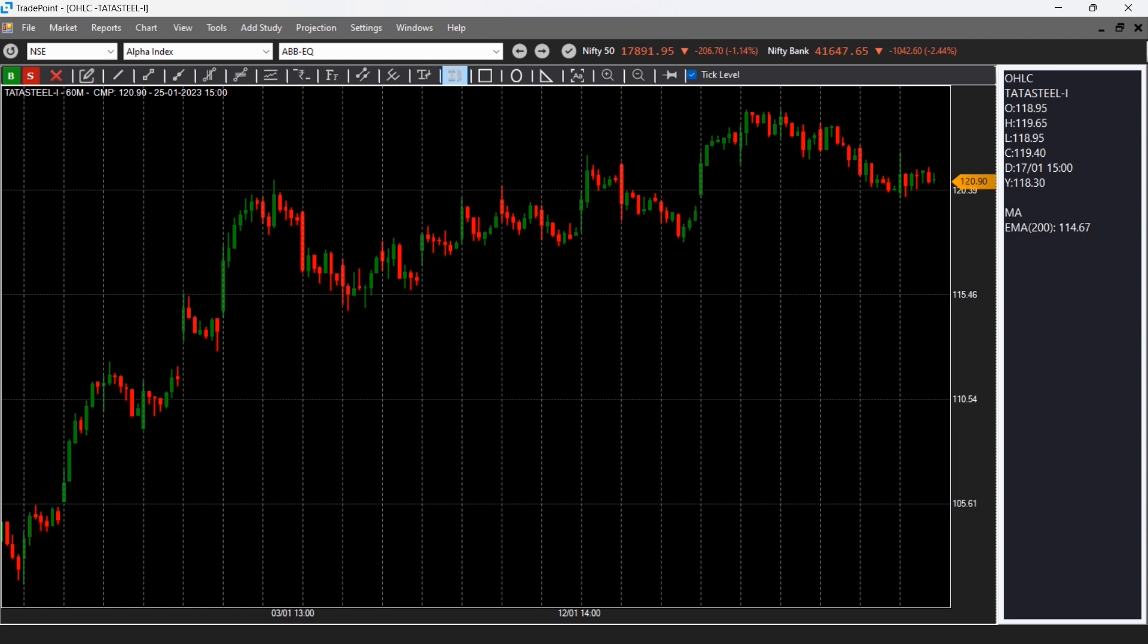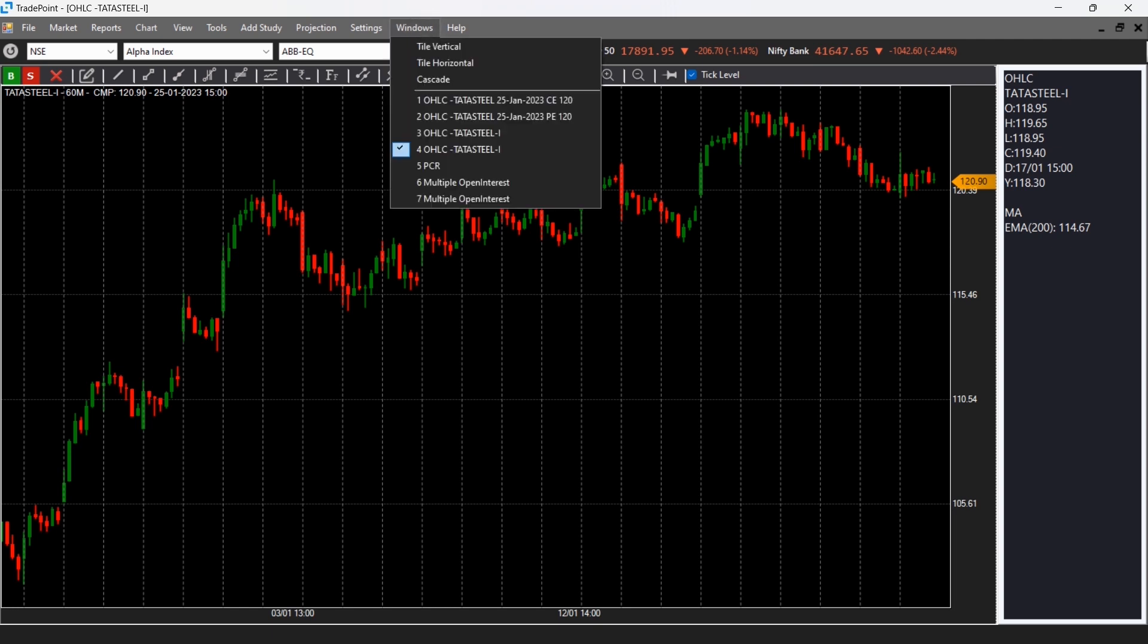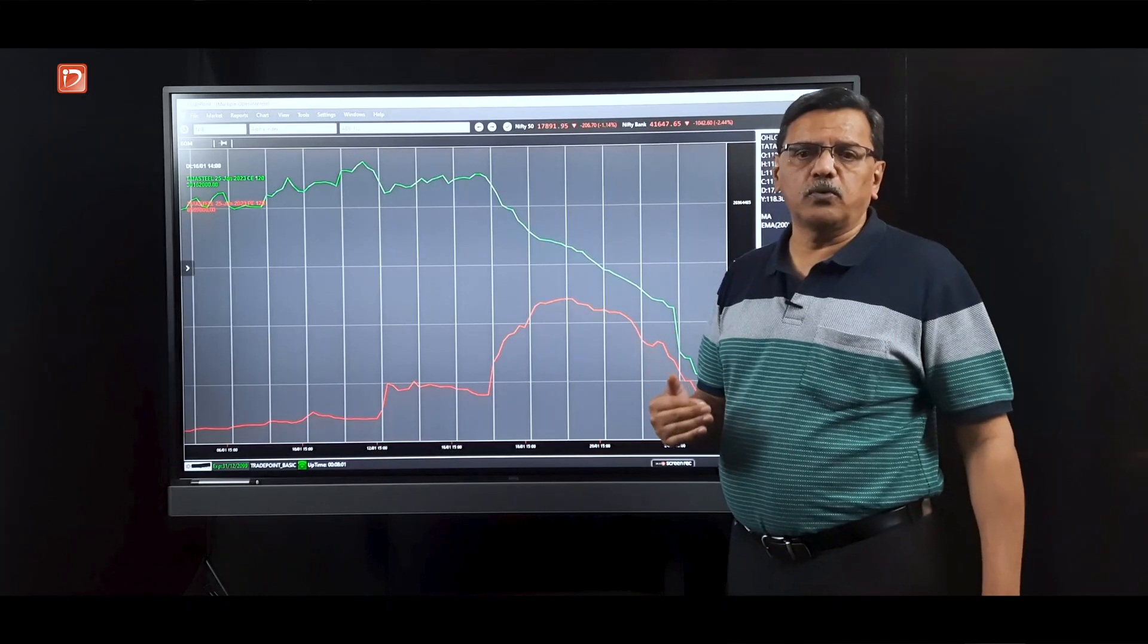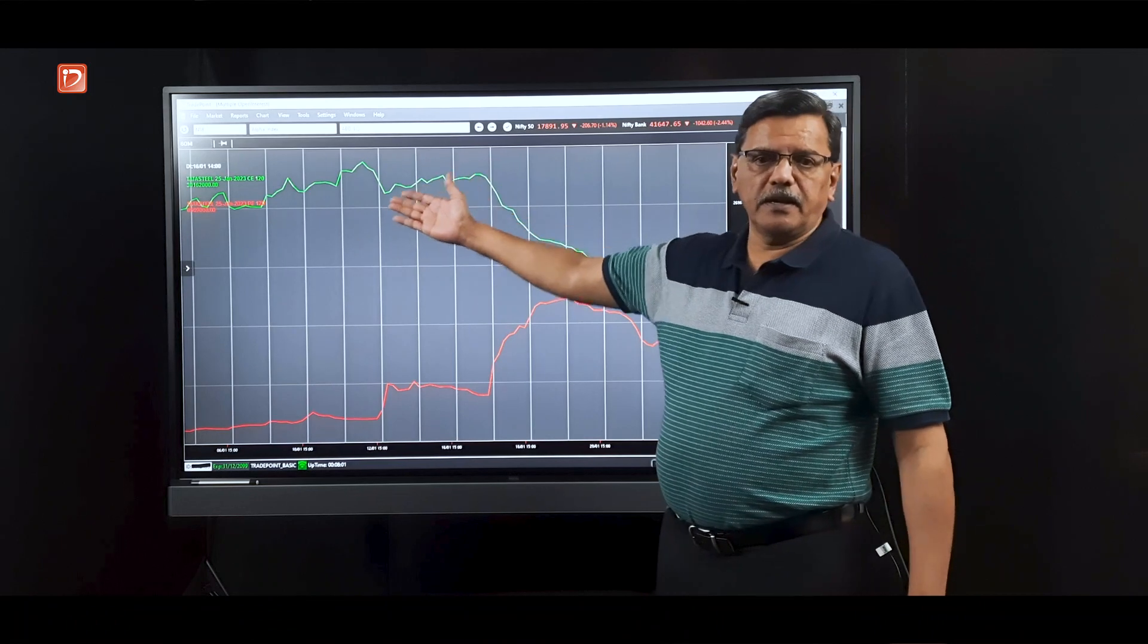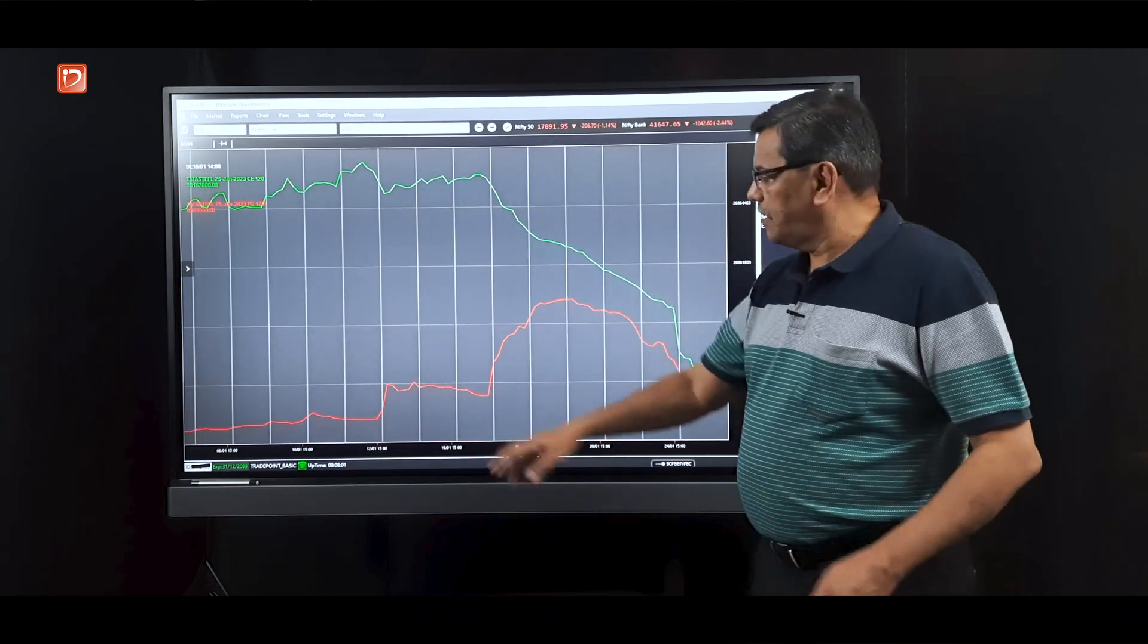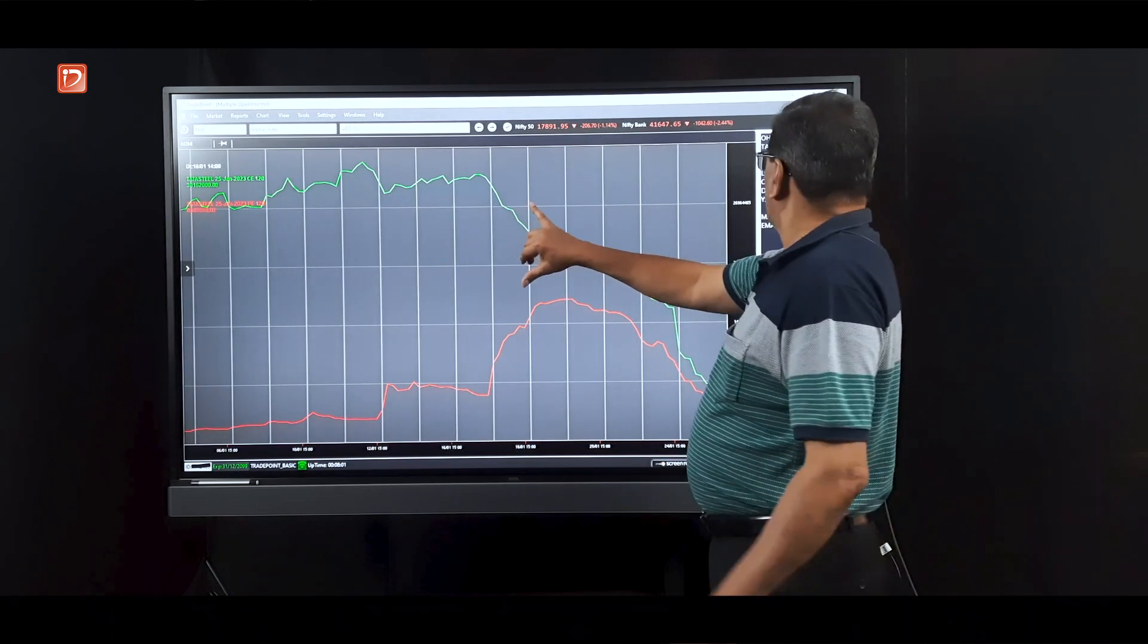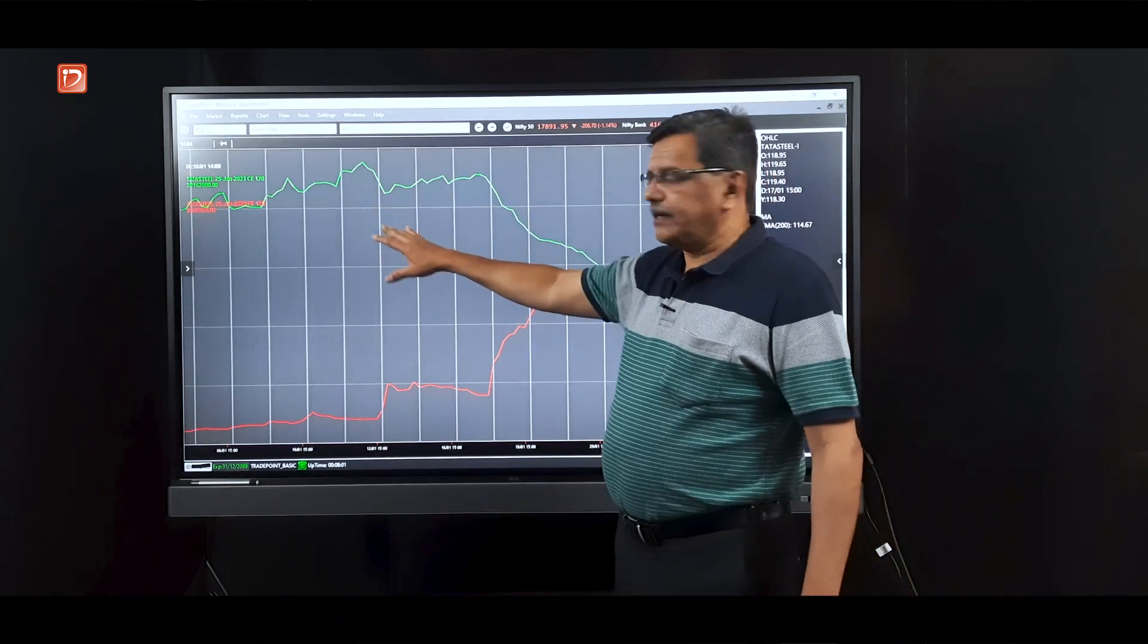From about 100-103, it went all the way to first it went to 120, which was on the second of January. And what happened on second January, someone asked me about Tata Steel and this is what I saw. It went to 120 at that time. Look at the green line, is the open interest of the 120 call, and the red line is the open interest of the 120 put.